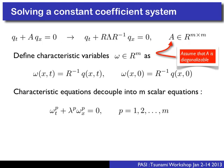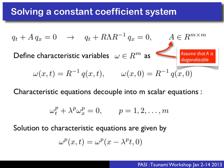We can replace A with R*Lambda*R_inverse. We define characteristic variables omega = R_inverse * Q, where R_inverse contains left eigenvectors. This leads to a system of decoupled scalar advection equations for these characteristic variables, since the lambdas are now scalar. The initial conditions are given by our initial Q values.